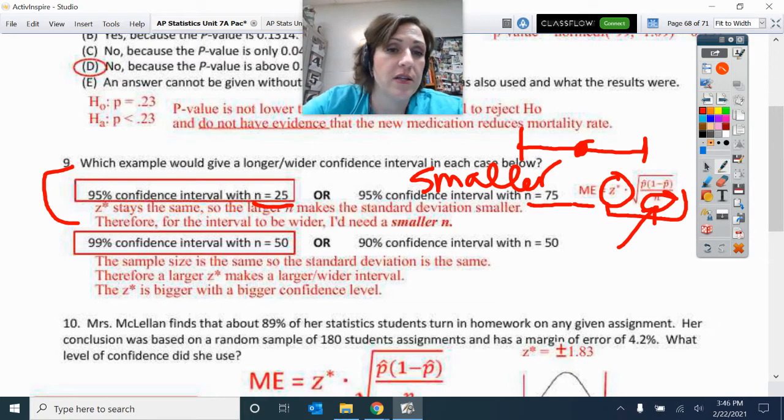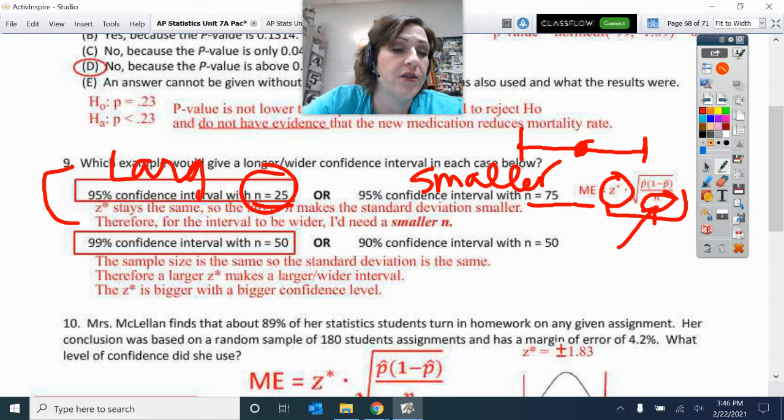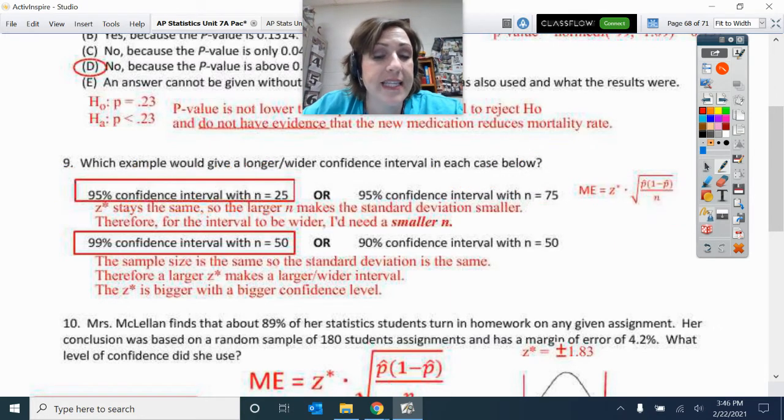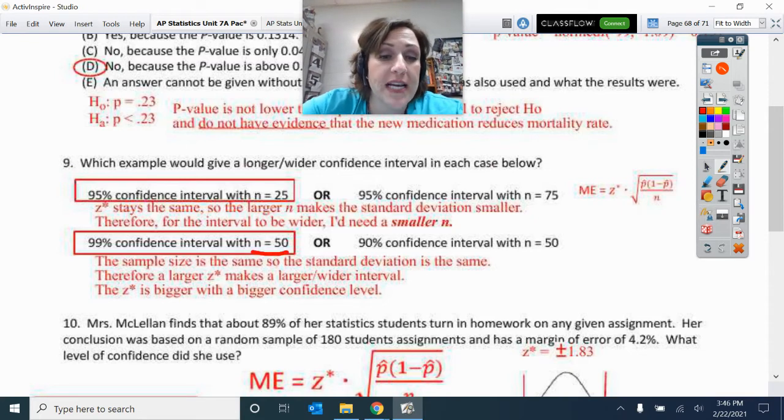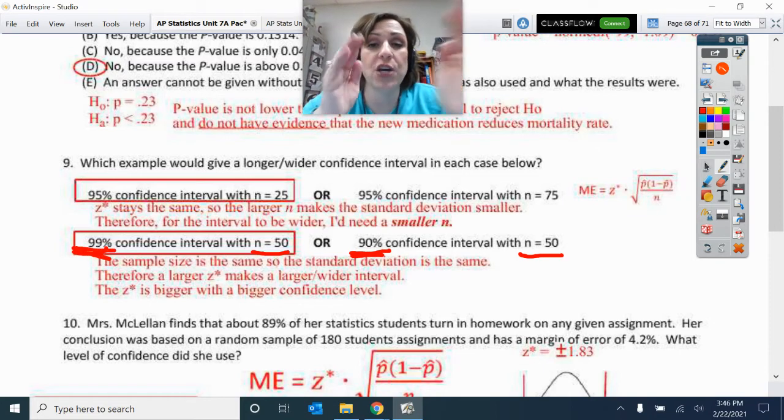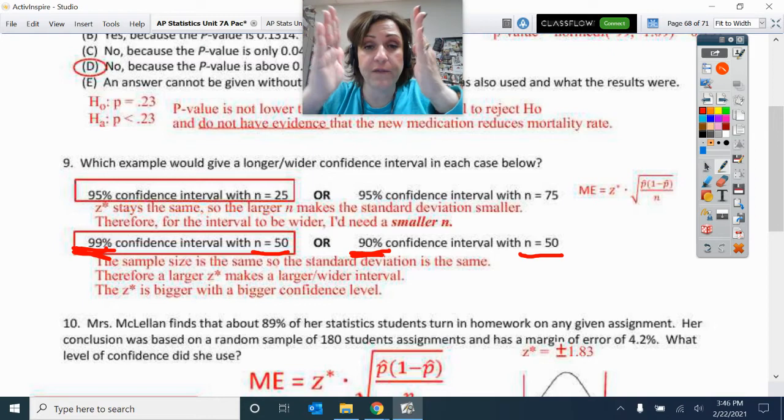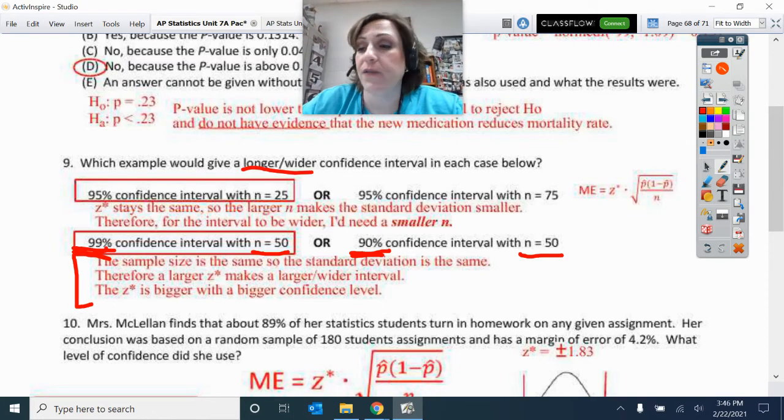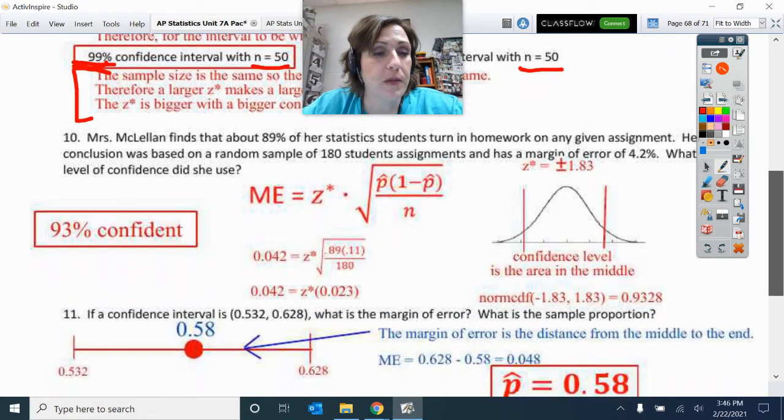So, therefore, this one is larger, wider, bigger standard deviation. Okay, the next one, same thing where the sample sizes are the same. N is the same, but this critical value is different. And I know that 90% confident versus 99% confident, more confidence is wider. So that makes this one have a bigger confidence interval. Okay, number 10.